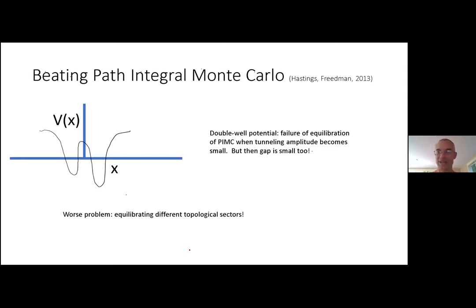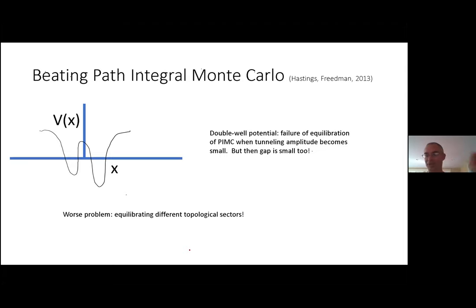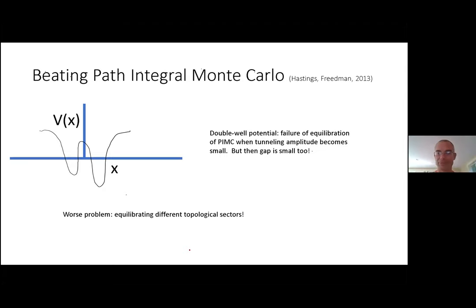Before talking about beating all algorithms — the more recent result — let me talk about how to beat some specific algorithms. Now we don't even need oracles; we write down specific Hamiltonians and show a specific algorithm fails. First, path integral Monte Carlo. A case where it does NOT have a problem: a double well potential — a single particle in one dimension with two wells, one slightly lower. Slowly change the heights so eventually the left well becomes lower than the right.